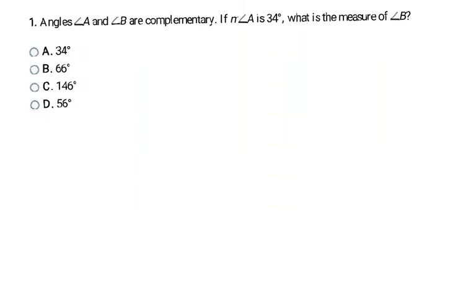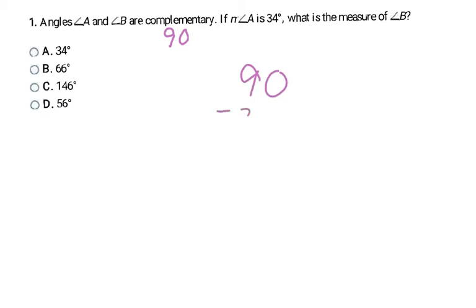Angles A and B are complementary, meaning they sum to 90 degrees. If angle A is 34 degrees, what is the measure of angle B? I know together they have to be 90, so I subtract 34 from 90, which gives me 56 degrees for angle B. My answer is D.